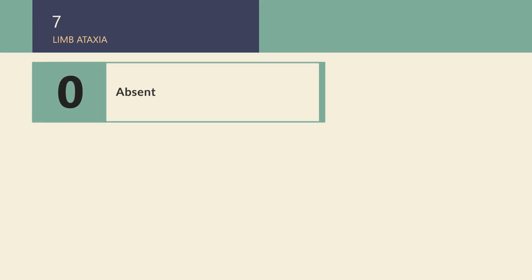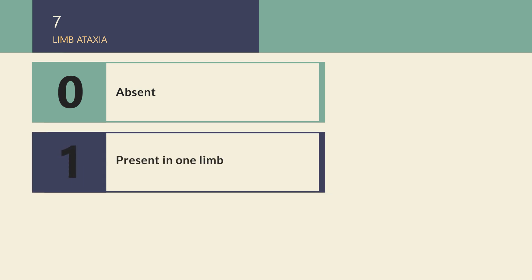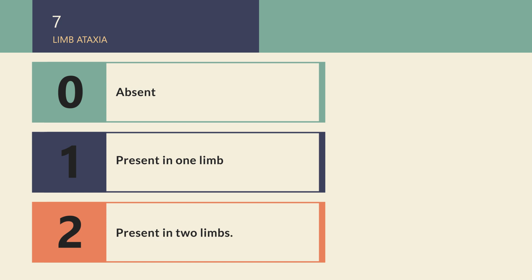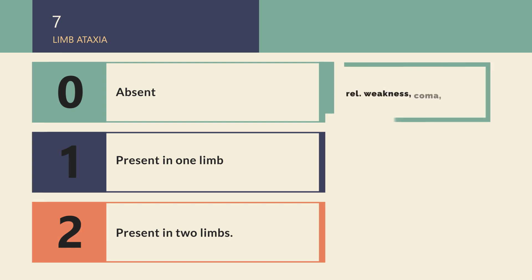Score 0 if ataxia is absent. Score 1 if ataxia is present in one limb. Score 2 if ataxia is present in at least two limbs. If testing is not possible due to limb weakness or in a patient who cannot understand such as coma or severe aphasia, score 0. In case of blindness, test by asking the patient to touch his nose from an extended arm position.